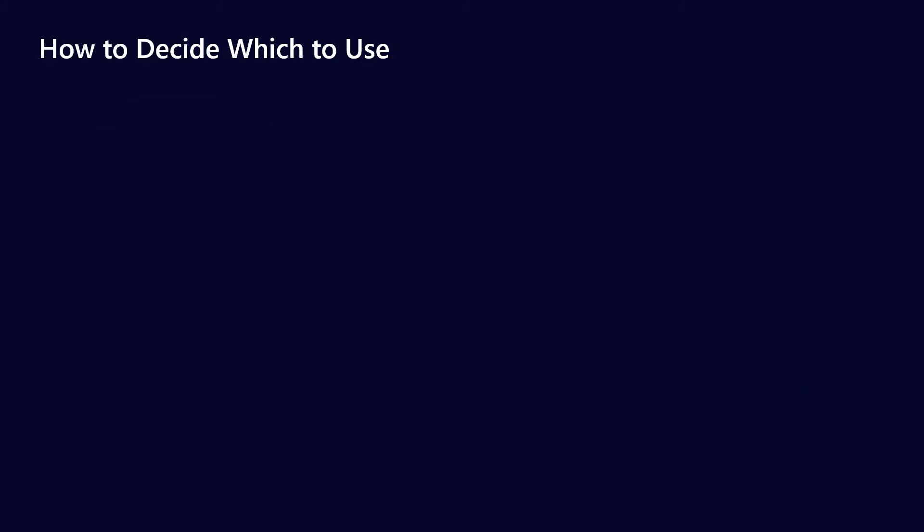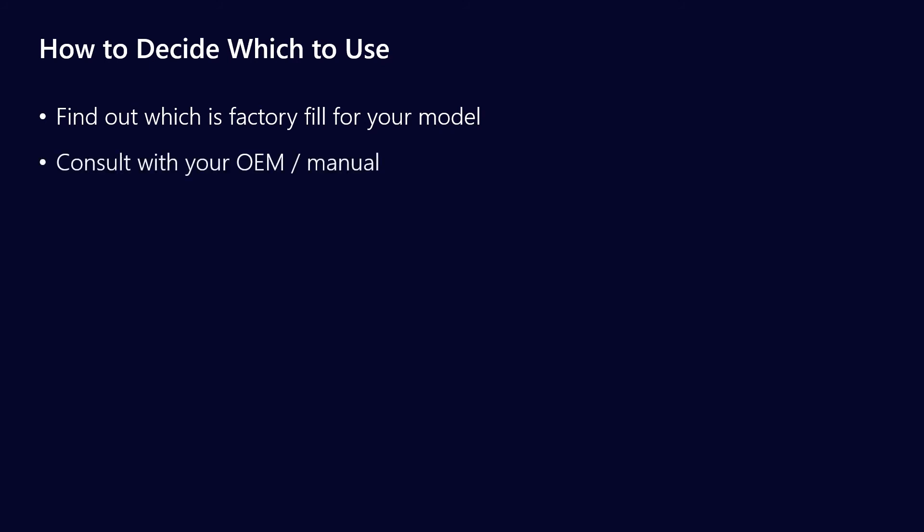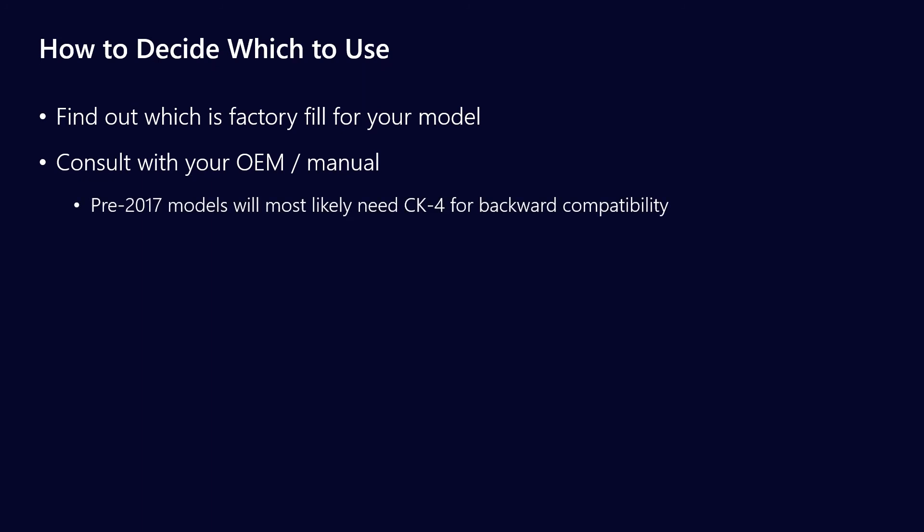So how do we decide which one to use? One of the first ways is to find out what the factory fill is for your truck — whatever the OEM is filling with, that's what you go with, whether it's CK4 or FA4. The other way is to consult directly with your OEM representative or check the manual. If it's a pre-2017 model, it's almost certainly going to be CK4, and we need that for reasons of backward compatibility. For engines from 2017 onwards, there is a chance it could be either CK4 or FA4.